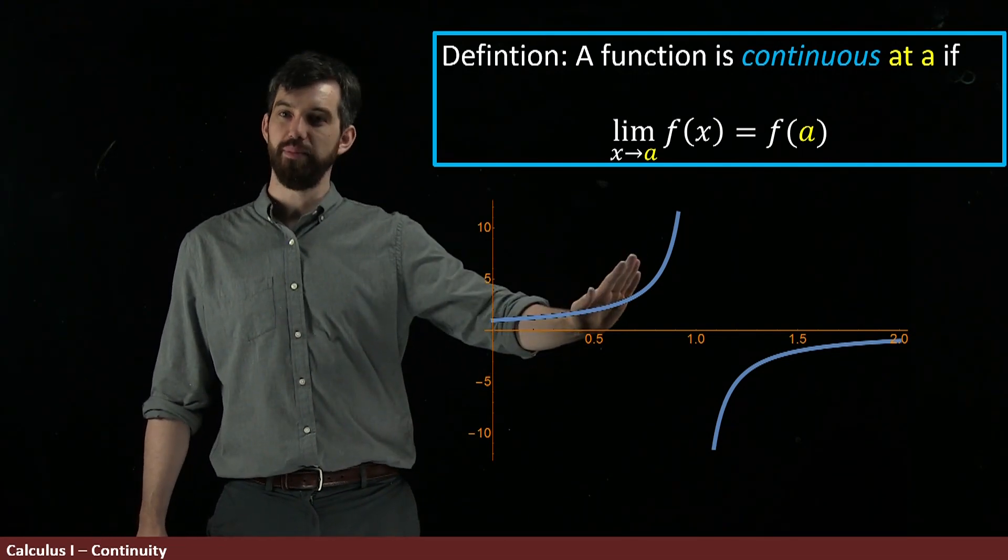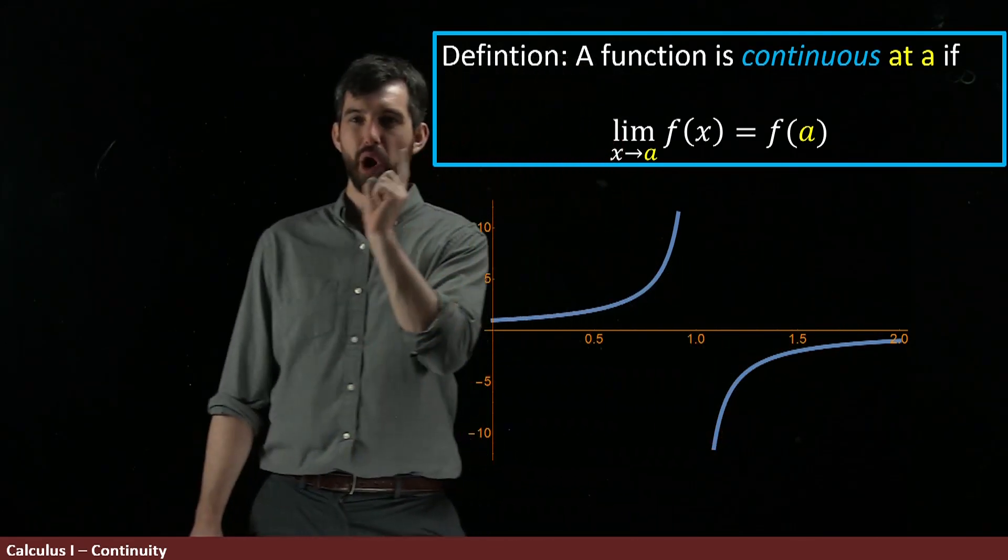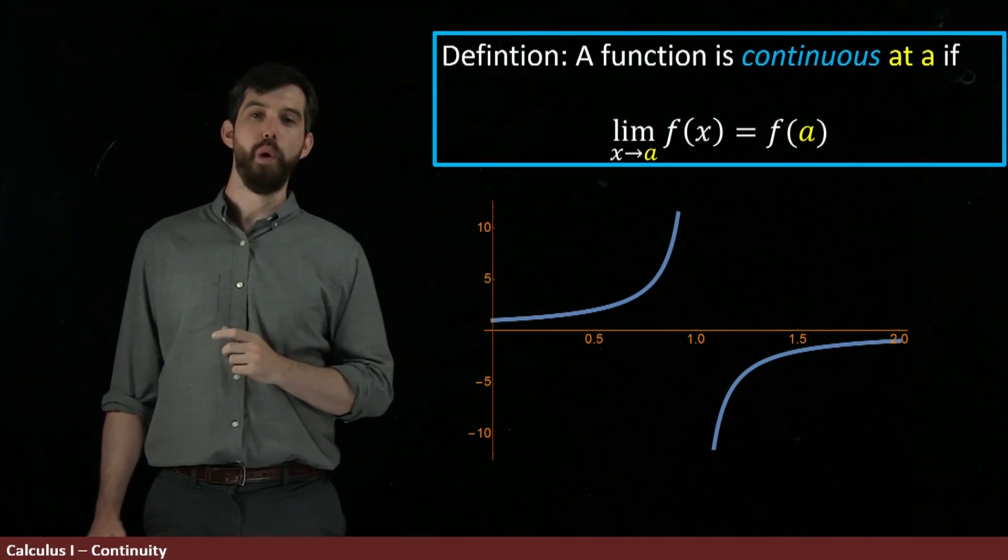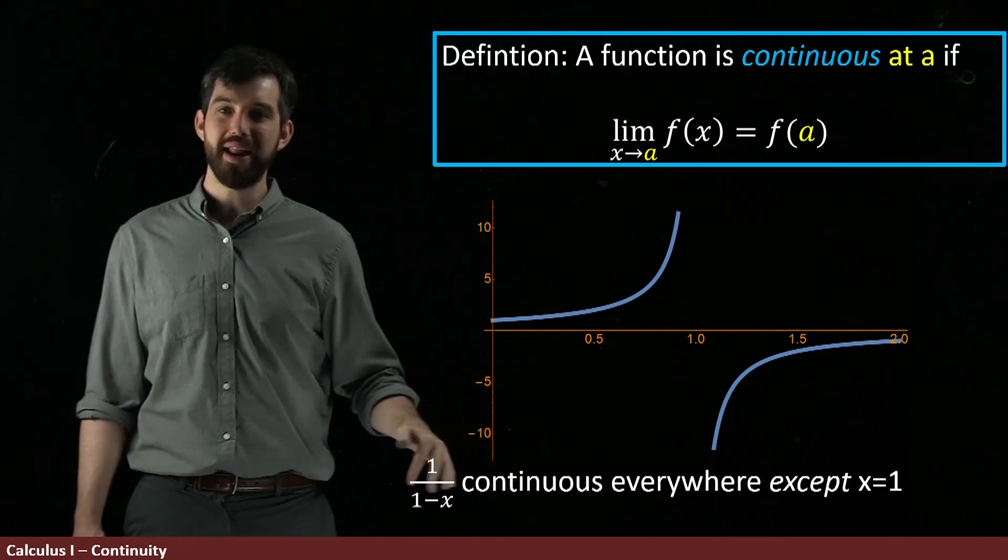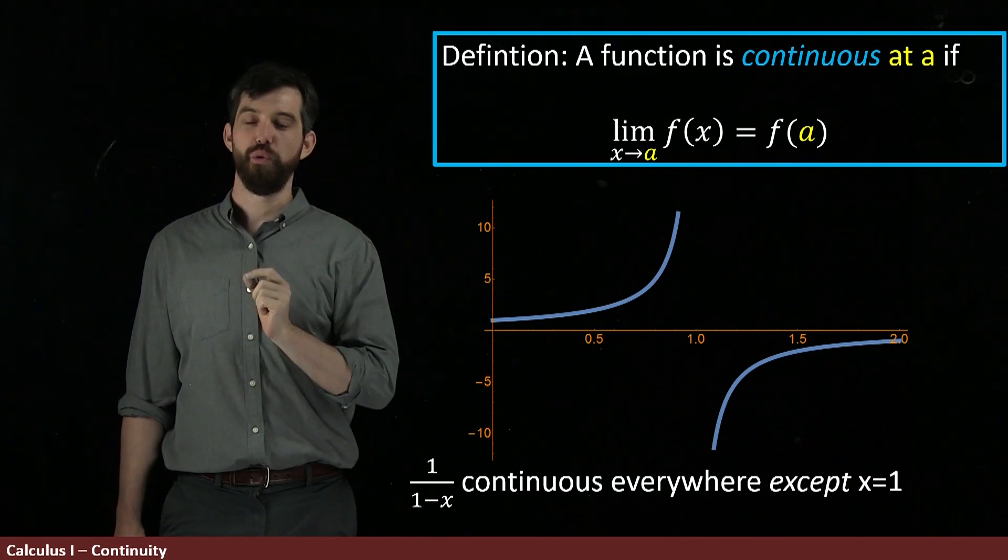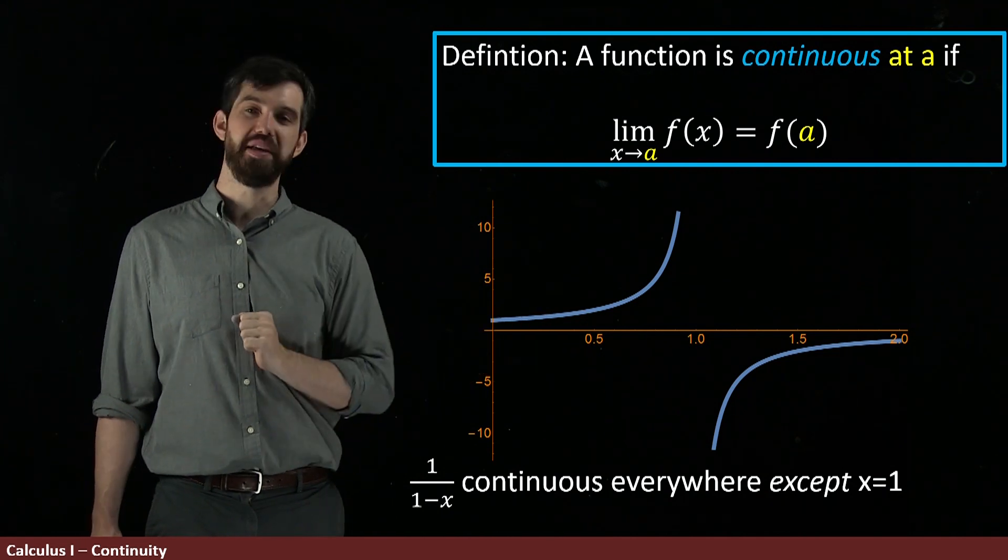In this region, it's going to be continuous. And likewise, in all of this region, it's continuous. But the problem, the discontinuity, is at this point of 1. So we can say that the function 1 over 1 minus x is continuous everywhere except x equal to 1. And for every other point, like 0 or 1 half, it's going to be continuous.